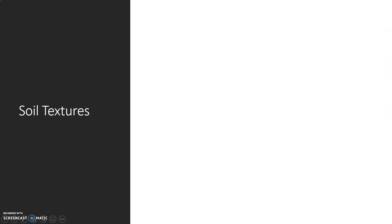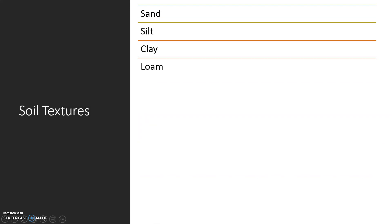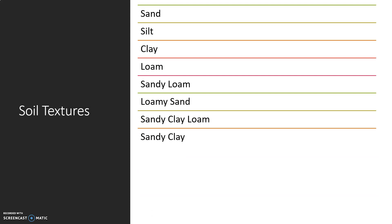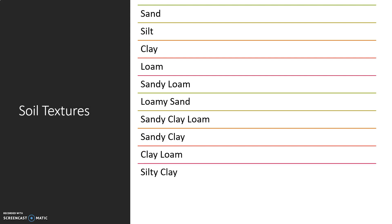There are 12 soil textures: sand, silt, clay, loam, which is a combination of sand, silt, and clay, sandy loam, loamy sand, sandy clay loam, sandy clay, clay loam, silty clay, silty clay loam, and silt loam.